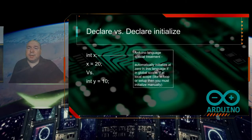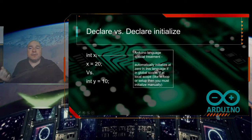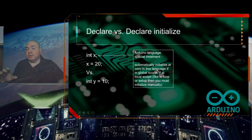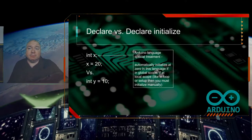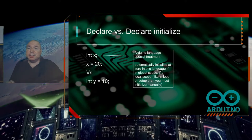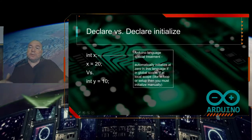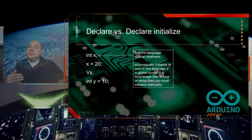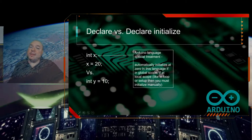Let's talk about declare versus declare-and-initialize. When we declare a variable like 'int x' at the global level — at the top of the file — it is automatically initialized to zero in Arduino. This is special for Arduino; other languages require you to initialize it yourself, like writing x equals 20. In Arduino, if it's in global scope it's set to zero. If it's in local scope, you have to initialize it — otherwise you'll get a 'declared without initialize' error.